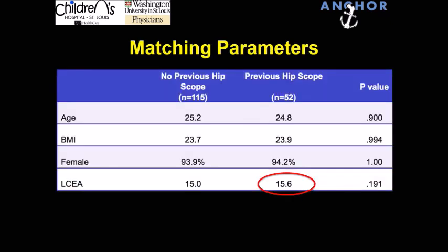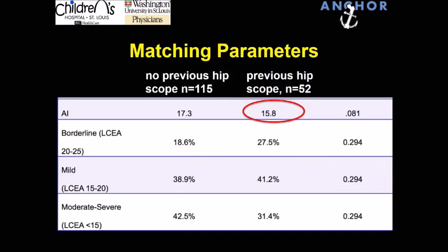The matched groups show that age and BMI are basically the same. About 94% of the patients are female in both groups. The lateral center edge angle is on average about 15, so these are truly dysplastic hips — not largely borderline hips. The index is 15.8 and 17.3 in those that had not had previous surgery. When we look at the severity of dysplasia, it is similar when broken down into borderline, mild, and moderate or severe in both groups.